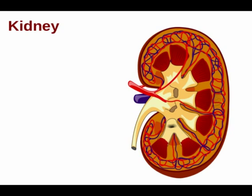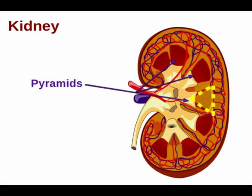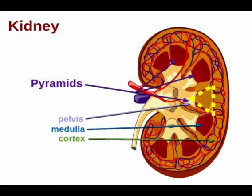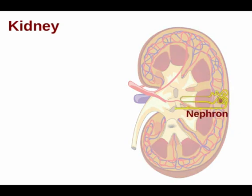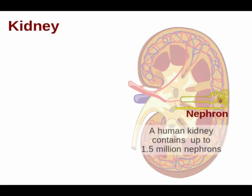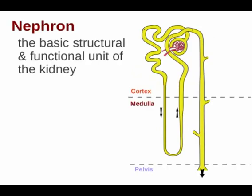We are going to introduce the most important structure of the kidney: the nephron. Remember these pyramid-shaped structures in the medulla. There's a pyramid shape that passes from the pelvis through the medulla and into the cortex as well, and it's within these extended pyramids that you find the nephrons. A typical human kidney contains around one and a half million nephrons, so the one shown here is not drawn to the correct scale.